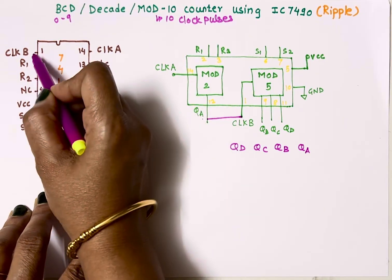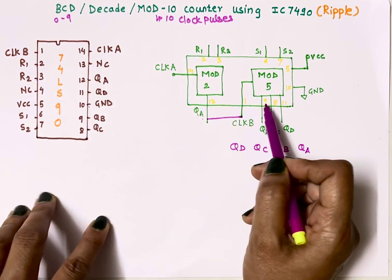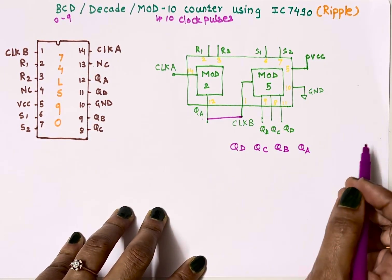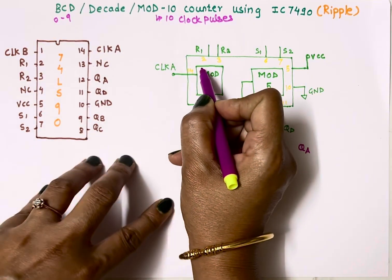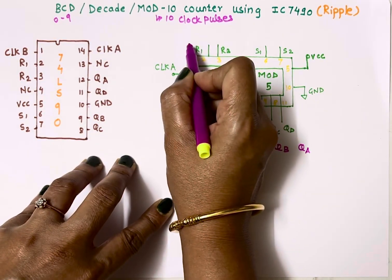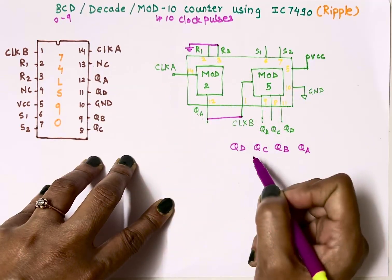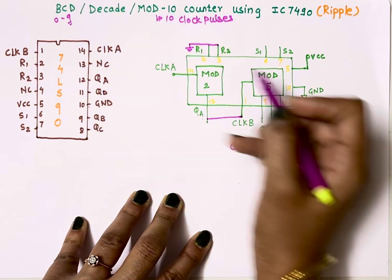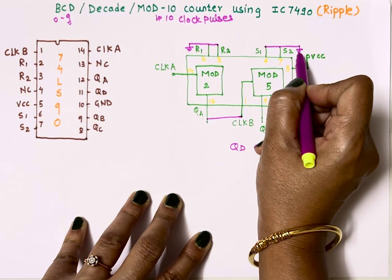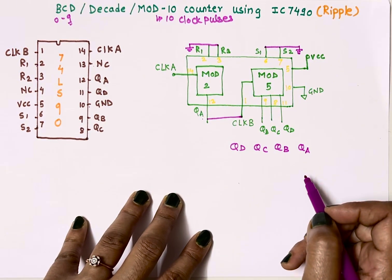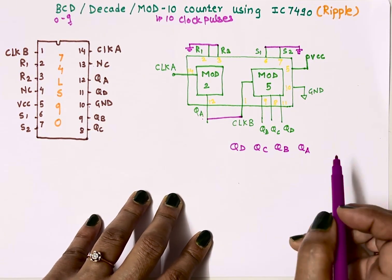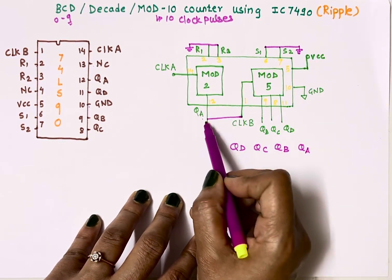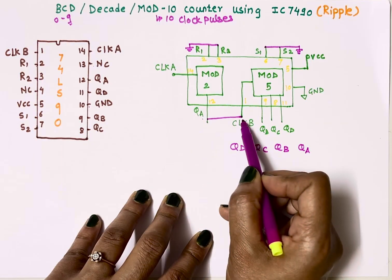To implement mod-10 counter we are not going to reset in between, so we will connect pin number 2 and 3 reset pins to ground so that this counter will count up to its maximum value, which is 9. We will also connect set pins to ground. Implementation of mod-10 counter is easy: just connect R1 and R2 to ground, S1 and S2 to ground, and QA to clock B.